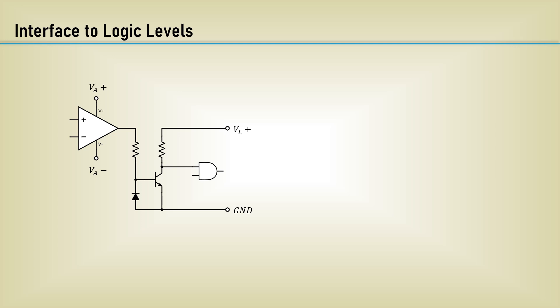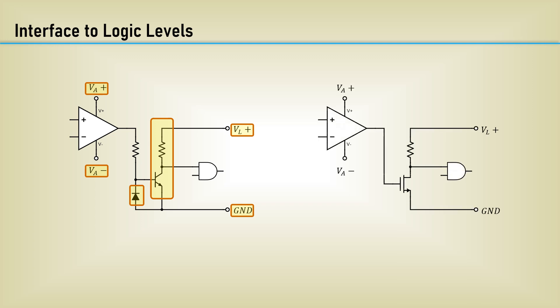Another complication for using op amps as comparators is the interface to digital circuits. Many times the op amp is used on bipolar power supplies, while digital circuits are almost always referenced to ground. This can be accomplished by using transistor inverters — in this case, a bipolar NPN transistor with a protection diode to not exceed the reverse breakdown of the emitter-base junction, though additional current will be consumed due to base current. The circuit can be greatly simplified by using an N-channel MOSFET as the inverter.